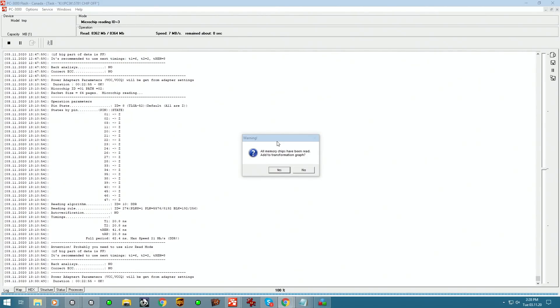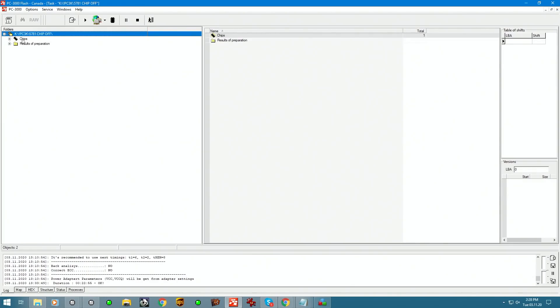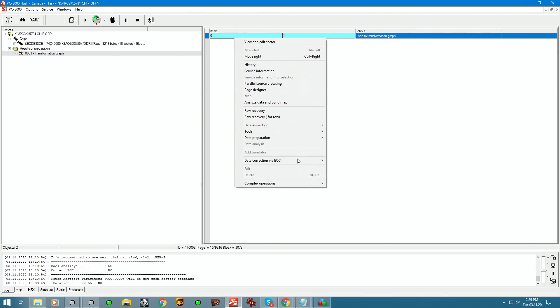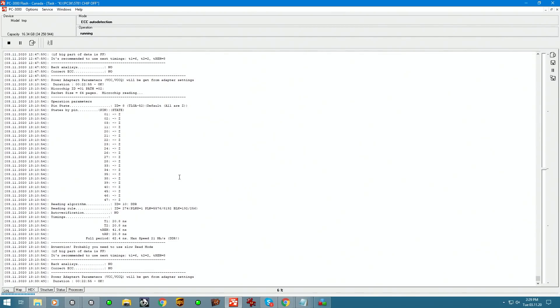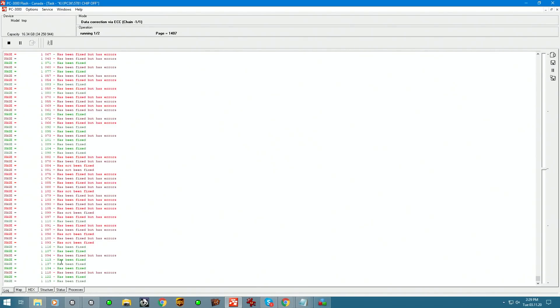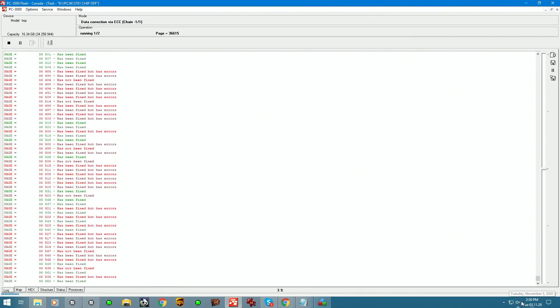Alright, at this point it's getting pretty late and all memory chips have been read. So let's go ahead and add it to the transformation graph. Those are chips - you can see the green plus means it's finished reading it. ECC correction, we need to wait this through. I was hoping it would not. Yeah, there we go. Found it quick. Let's get this fixed.